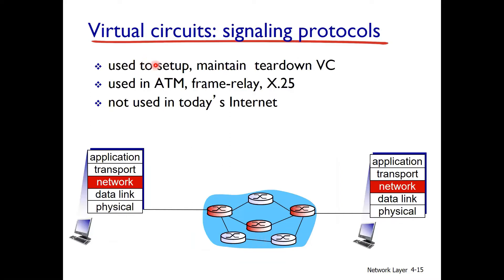Virtual circuit signaling protocols are used to set up, maintain, and tear down VCs. These were used in ATM, Frame Relay, and X.25. They are not used in today's internet, which uses a datagram-based architecture.